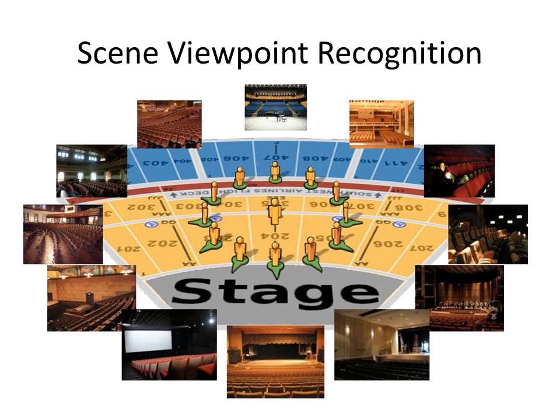For example, if you are standing inside a theater, you can look in different directions and see different views. Although all of these views belong to the same place category — theater — the photos in this space look very different from different viewpoints. This is because a typical camera has a limited field of view and can only capture a portion of the environment around the observer.